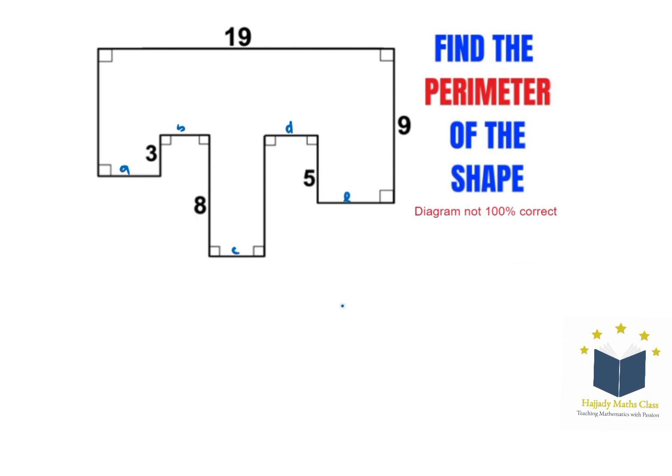E, everything should sum up to 19. The first assumption is that the horizontal line, which is the same as A + B + C + D + E, should equal 19.